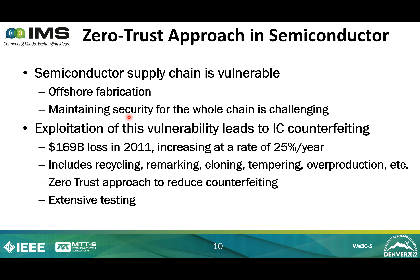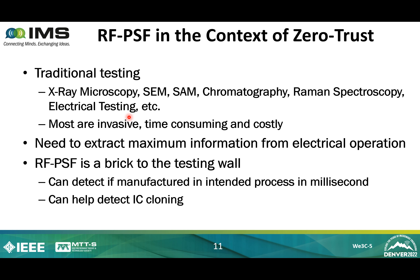IC counterfeiting caused nearly $169 billion in losses a decade ago and is currently estimated to be several trillions. Counterfeiting includes recycling, remarking, cloning, tampering, overproduction, etc. Instead of having predefined trust, the zero trust approach can be followed to perform extensive testing and detect most of it. Traditional testing methods such as X-ray microscopy, scanning electron microscopy, SAM, chromatography, Raman spectroscopy, and electrical testing are mostly invasive, time-consuming, and costly. More testing will increase cost and time exponentially. Hence, we need to extract as much information as possible from non-invasive electrical testing, and RFPSF fits there nicely. Using RFPSF, it is possible to check whether the IC was fabricated using the intended process, making it part of the cloned IC detection process.